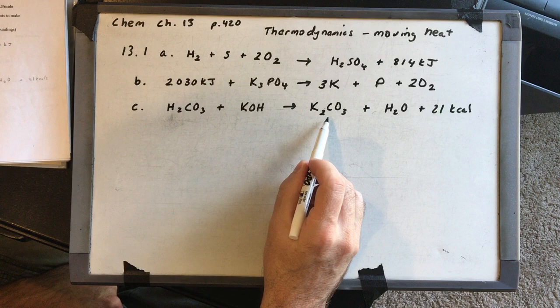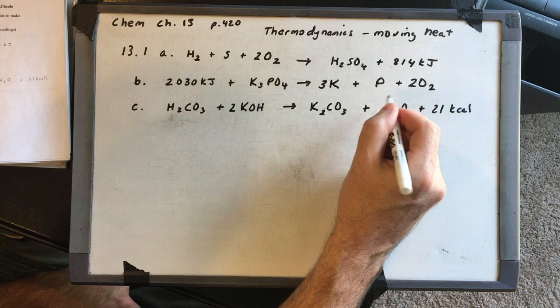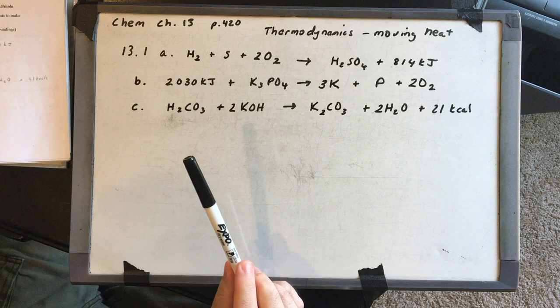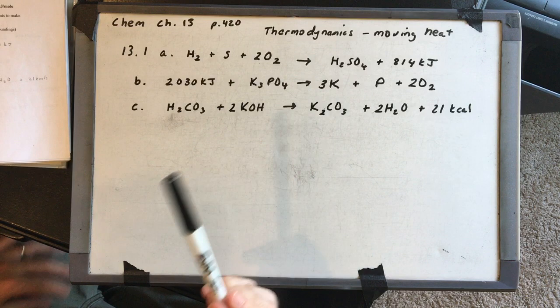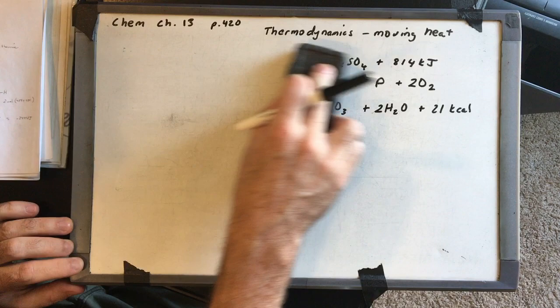We need to balance: we have two potassiums, so I'll put a 2 in front of KOH, giving four hydrogens, so I need a 2 in front of H2O. That balances it. So that completes 13.1. The main purpose was to practice formation reactions, decomposition reactions, acid-base reactions, and remember: exothermic energy goes on the right side, endothermic energy goes on the left side.